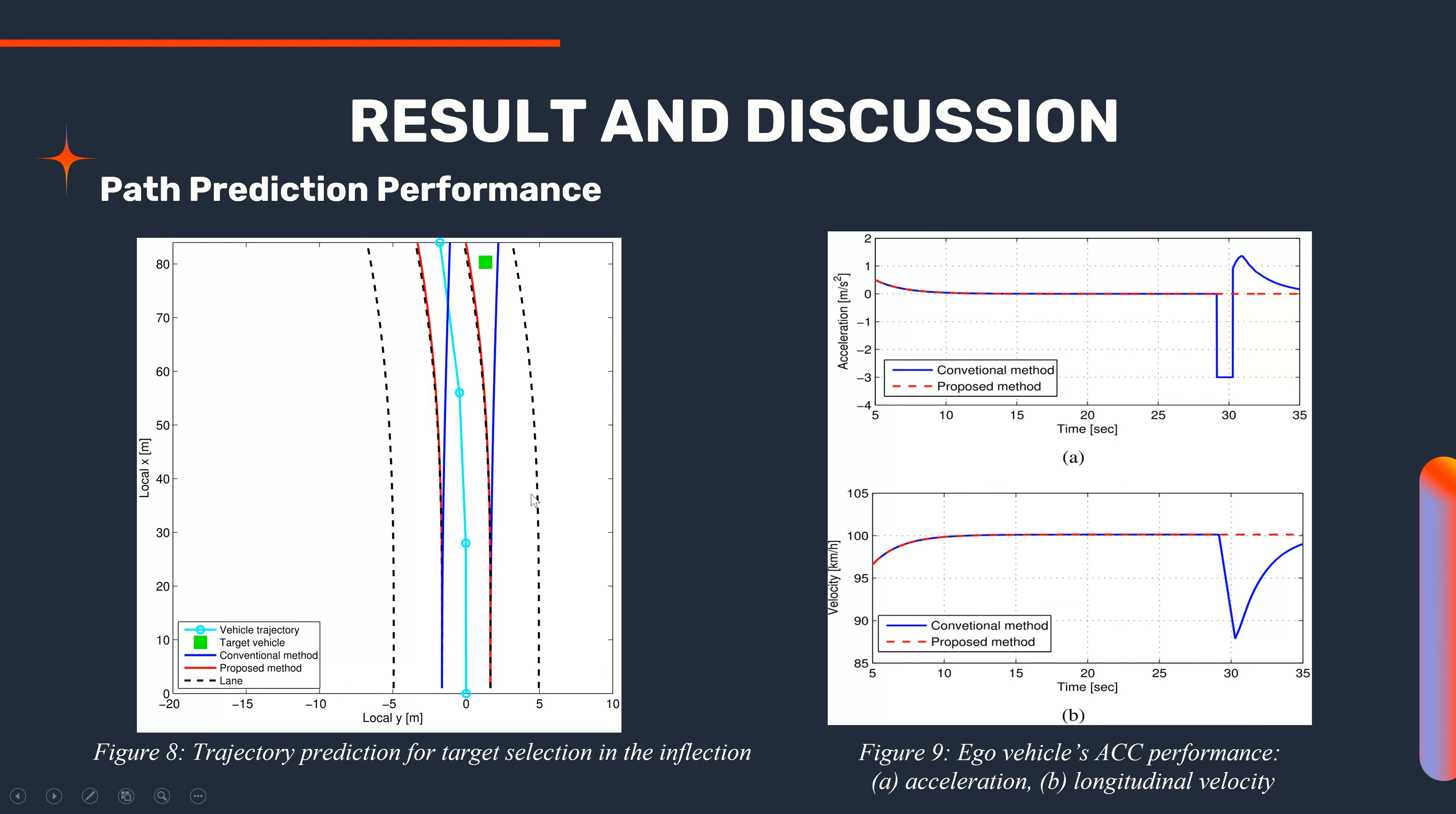The conventional method detected the neighbor target vehicle when driving along the right lane as the CIPV because the path prediction of the ego vehicle indicates the right lane. Due to this wrong path prediction, the ego vehicle decelerates unnecessarily and suddenly, which is an undesirable event. On the other hand, the proposed method accurately predicted the vehicle path the ego vehicle was driving without deceleration, since the path prediction was relatively accurate.